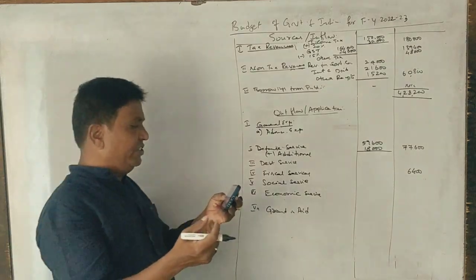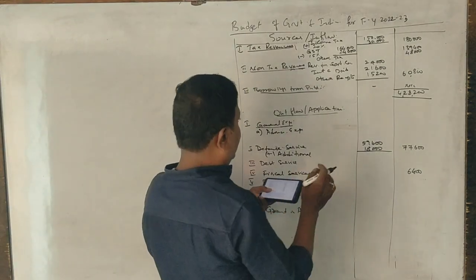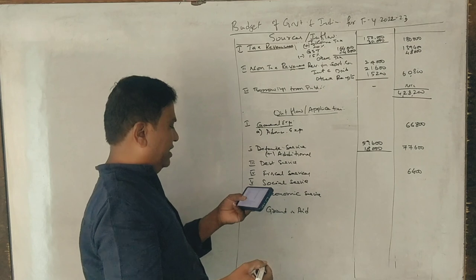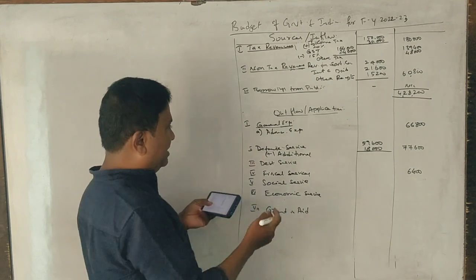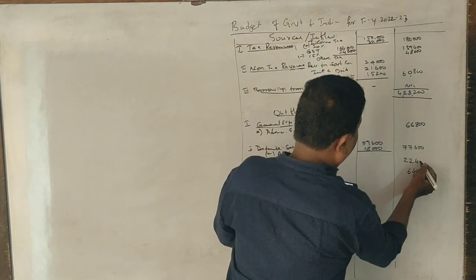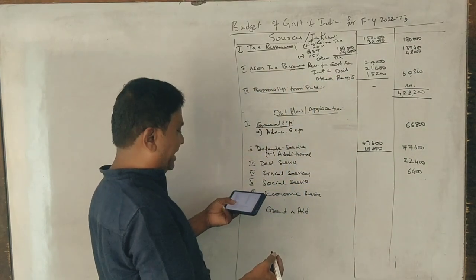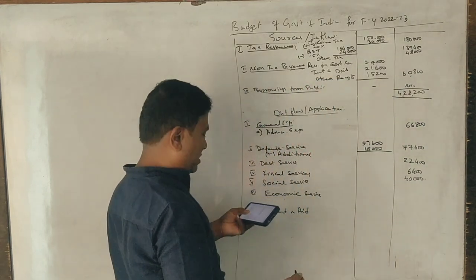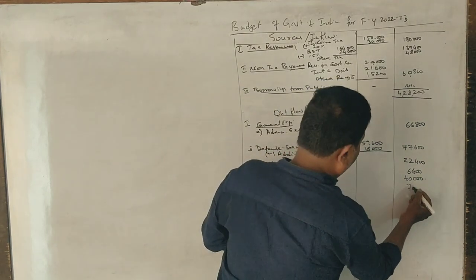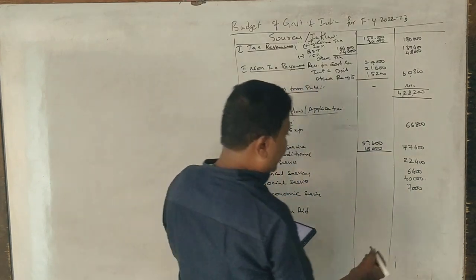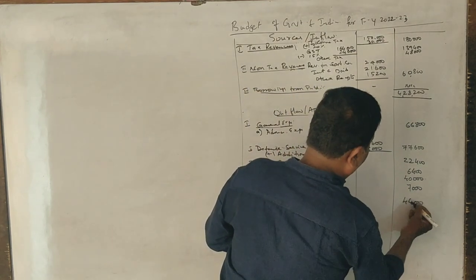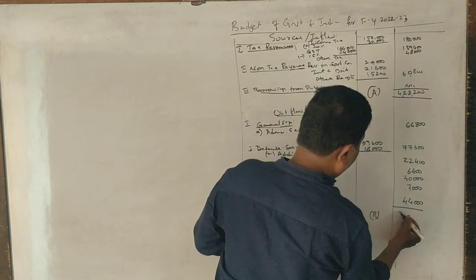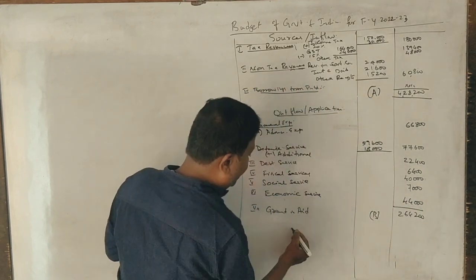Administration services: 66,800. Defense services: 22,400. Social services: 40,000. Economic services: 7,000. Grants: 44,000. Total expenditure: 2,64,200. This is a surplus.